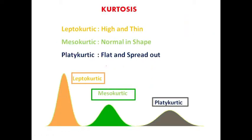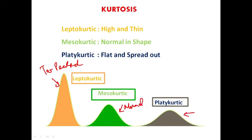Now you can see in this slide showing leptocurtic, mesocurtic, and platycurtic curves. The leptocurtic curve is too peaked in comparison to the normal curve. The mesocurtic curve is the normal curve — it is neither too peaked nor too flattened. The platycurtic curve is flatter as compared to the normal curve. To summarize: the leptocurtic curve is high and thin, the mesocurtic is normal in shape, whereas the platycurtic is flat and spread out.